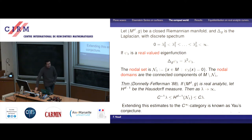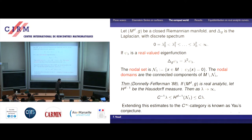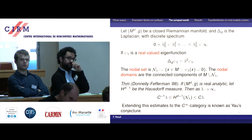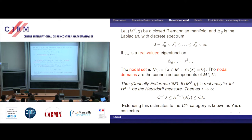Nodal sets are just zero sets of eigenfunctions, in case you were wondering. Nodal domains are the connected components when you remove the nodal sets. The first result — probably the only result which is optimal — is due to Donnelly–Fefferman. For Donnelly–Fefferman you need to assume that the manifold is real analytic, and you compute the (d−1)-dimensional measure of nodal sets.